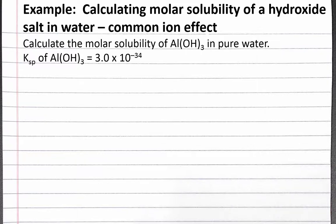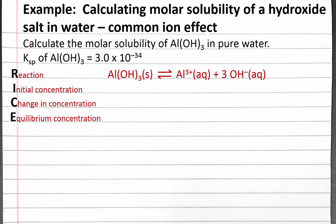We'll start by creating a RICE table for the dissolution of solid aluminum hydroxide in water. When one formula unit of aluminum hydroxide dissolves in water, it produces one aluminum ion and three hydroxide ions. We don't need to keep track of solid aluminum hydroxide in our RICE table, because solids are not in our equilibrium constant expression.